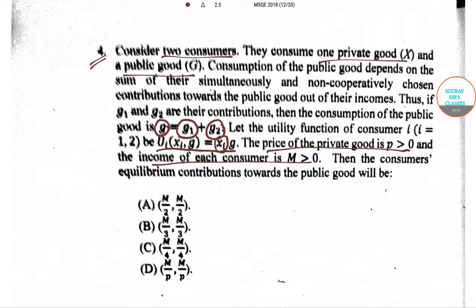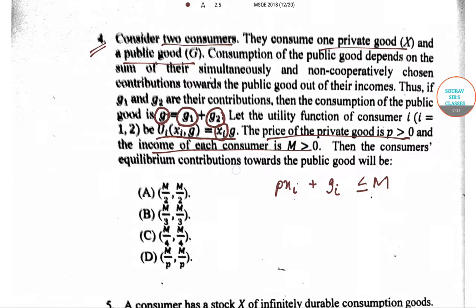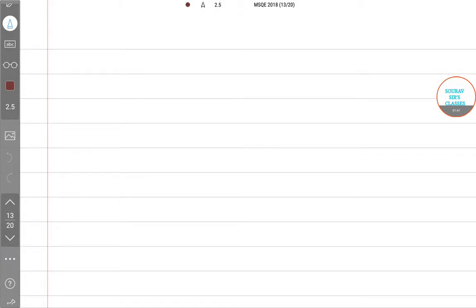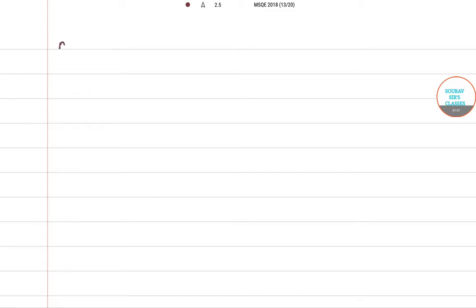So let us see the budget constraint of both individuals. For the i-th individual, we take the budget constraint as P·Xi + Gi ≤ M. Assuming the budget equation is binding, we get P·Xi + Gi = M. We need to maximize the utility function of the i-th individual subject to this budget equation, keeping in mind that G = G1 + G2. We will first optimize for the first individual: maximize U1(X1, G) = X1·(G1 + G2) subject to P·X1 + G1 = M.